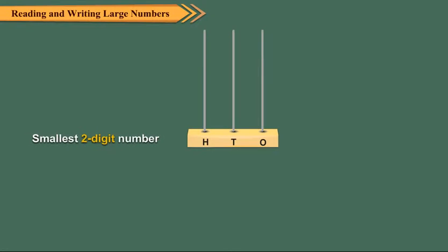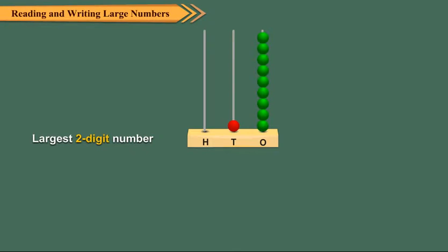Smallest two-digit number is 10. Largest two-digit number is 99.